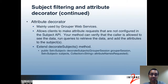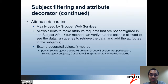The next part is the attribute decorator. This is mainly currently used in Grouper web services. It allows clients to make attribute requests that are not necessarily configured in the Subject API configuration. Your method can verify that the caller is allowed to see the data, run queries to retrieve the data, and then add the attributes to the subjects. One example of where this may be useful is if the requested attribute is not in your subject source — your method can retrieve the attribute from another location and add it to the subject data. To do this, you would extend the decorate subjects method. The parameters include the Grouper session to allow you to know who the caller is, the subjects, and the attributes being requested.